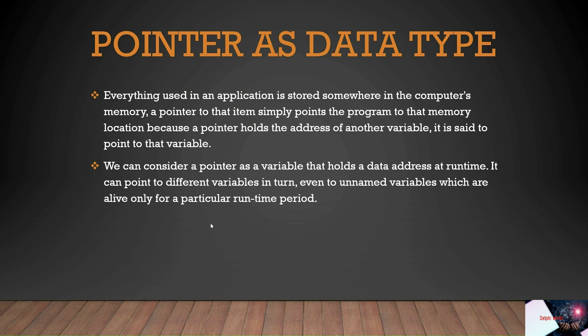A pointer is a data type. Everything used in an application is stored somewhere in computer memory. A pointer to an item simply points to that memory location, because the pointer holds the address of the variable it is set to point to. We can consider a pointer as a variable that holds data at a certain memory location.